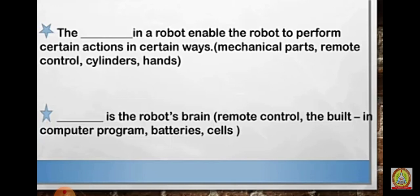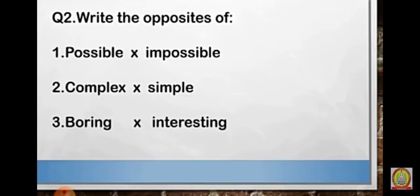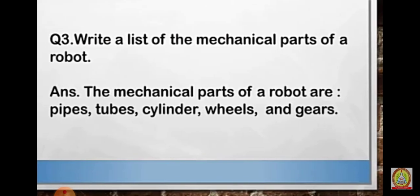The mechanical parts in the robot enable the robot to perform a certain action in a certain way. The computer program is the robot's brain. Vocabulary pairs: possible/impossible, complex/simple, boring/interesting.